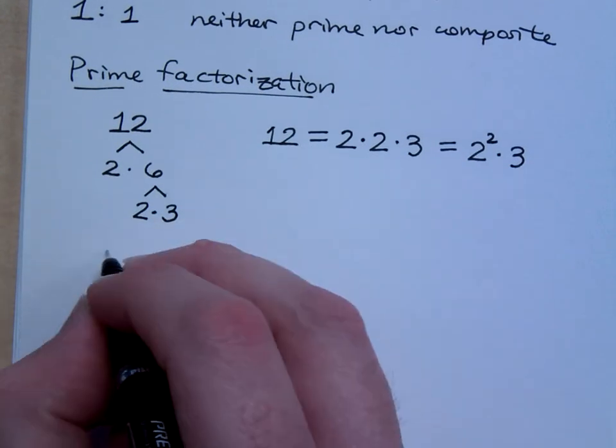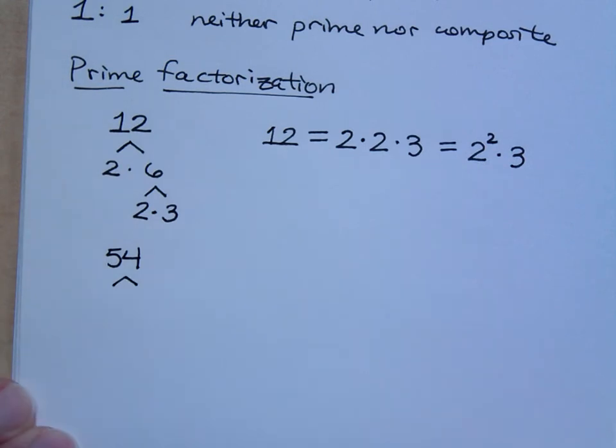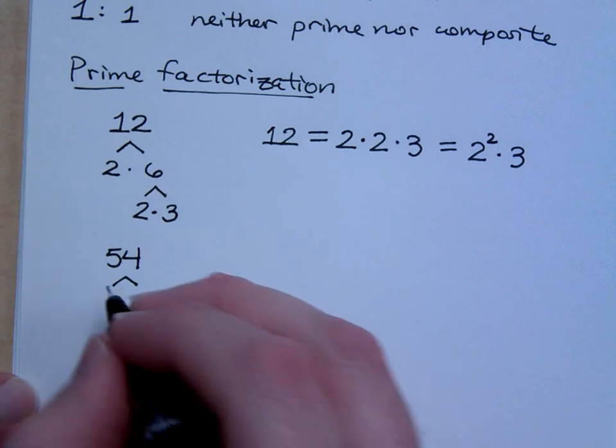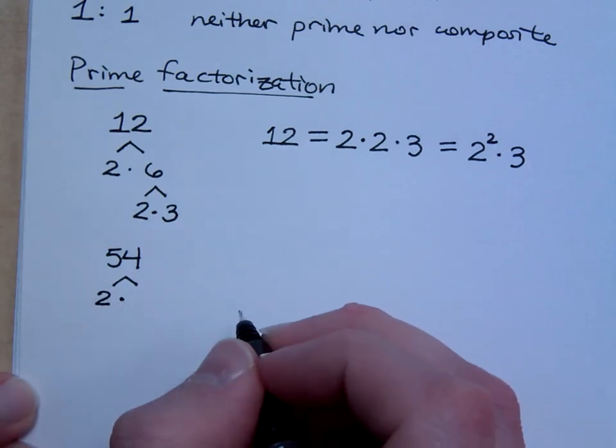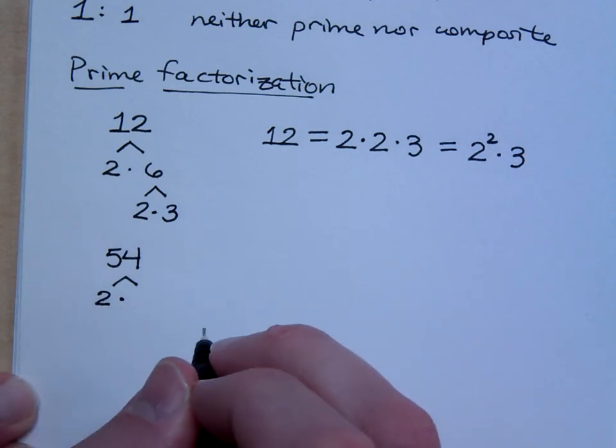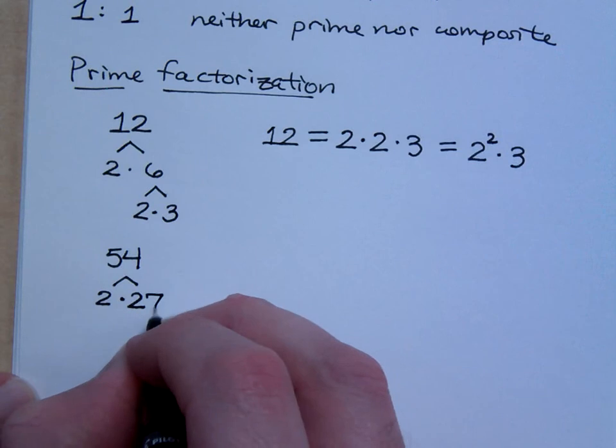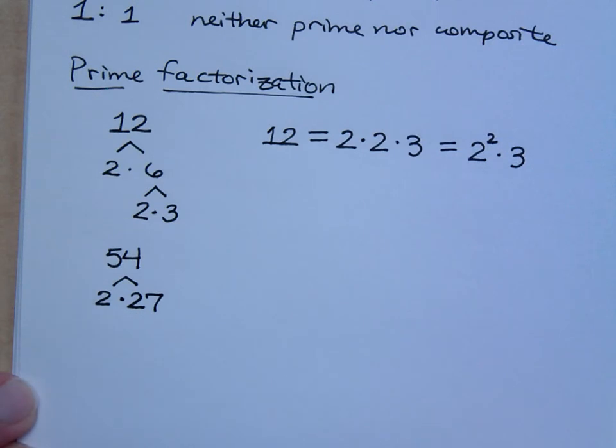Okay. Let me do another one for you. If I were to do 54, start with the first prime number that we have. What's the smallest prime number you know? I'll give you a hint. It's the only prime number that's even. 2, right? Does 2 go into 54? Yes. How many times does 2 go into 54? One wrong division ruins everything. What's half of 54? 27. Does 2 go into 27? No.